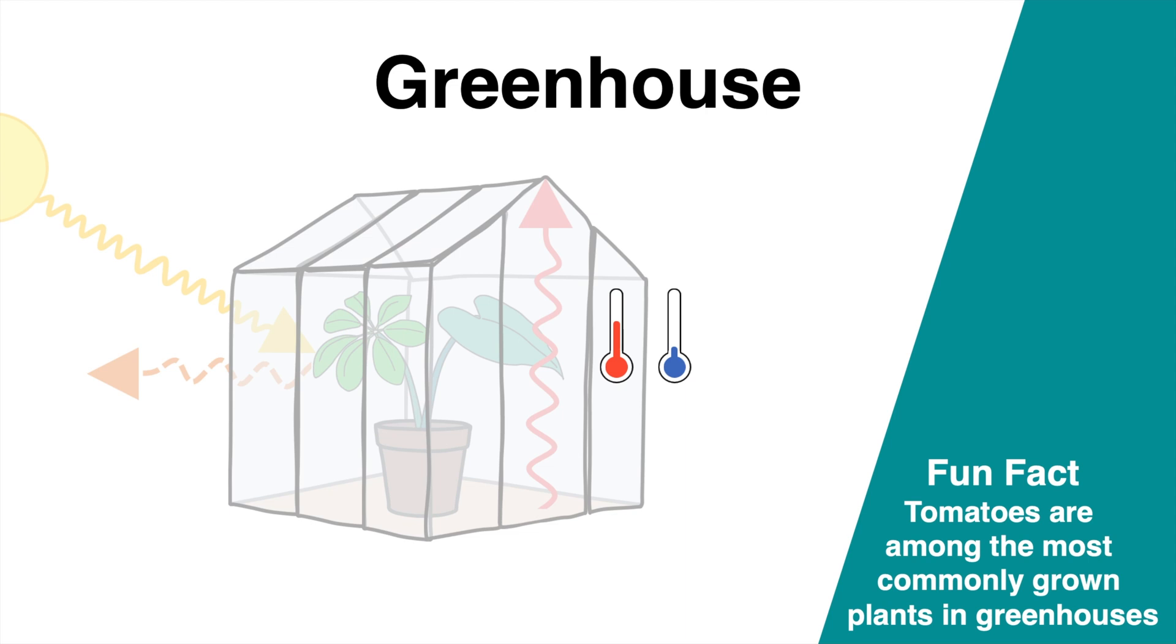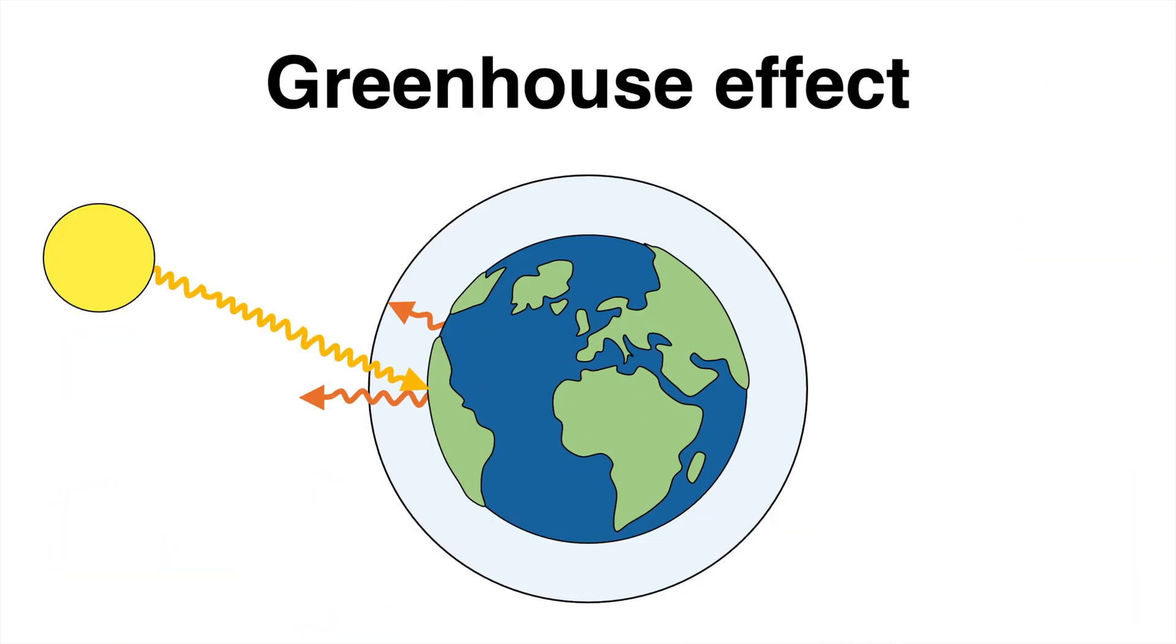The mechanism of heating inside a glass greenhouse is due to the reduction of convection and therefore it differs a little from the global greenhouse effect. Nevertheless, it helps to understand it.